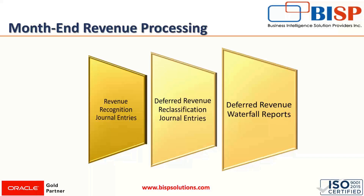The month-end revenue processing includes three steps. First is creating the revenue recognition journal entry — we covered how it is run in our previous session. Revenue recognition journal entries are created to post revenue from the revenue plans. The second step is the deferred revenue reclassification journal entry, which makes the month-end adjustment to deferred revenue. We must create a revenue reclassification journal entry each month to ensure accurate results in subsequent periods. The final step is running the deferred revenue waterfall report. These three steps must be run in order.